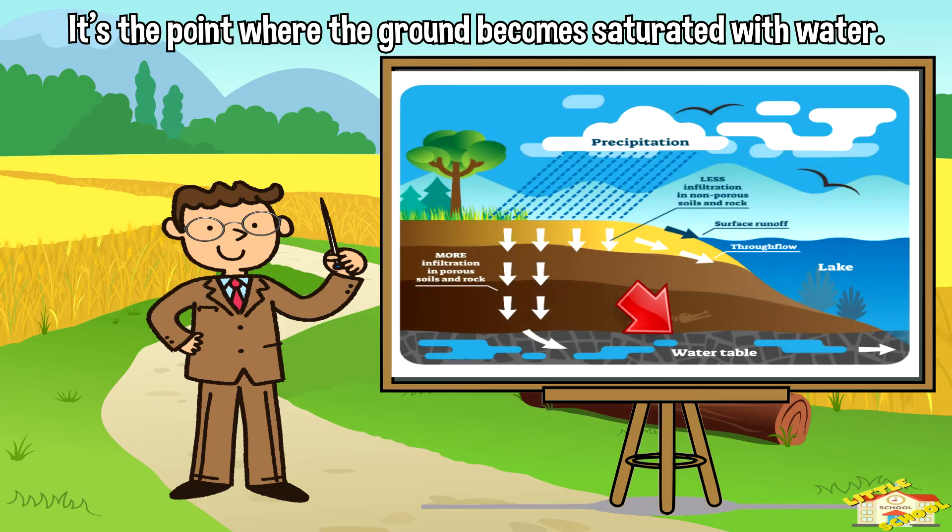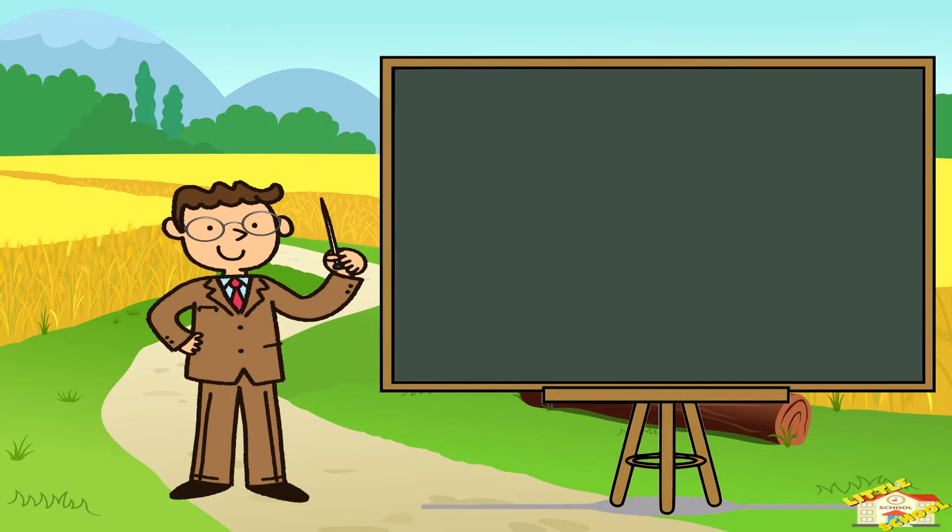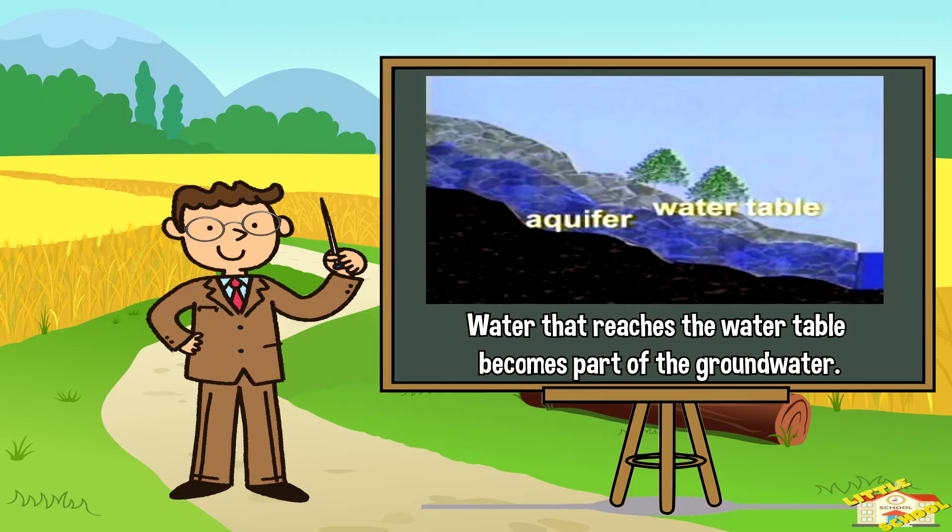Water that infiltrates the ground eventually reaches the water table. Groundwater: Water that reaches the water table becomes part of the groundwater.